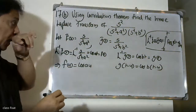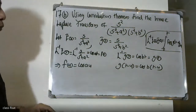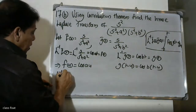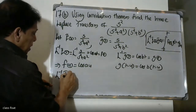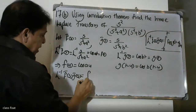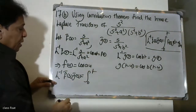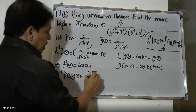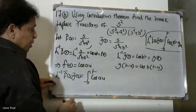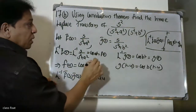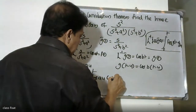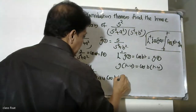Substituting into the convolution formula: the inverse Laplace of F̄(s)·Ḡ(s) equals the integral from 0 to t of f(u)·g(t minus u) dt, which is the integral from 0 to t of cos(au) times cos(b(t minus u)) du.